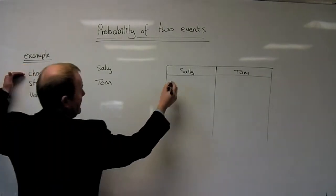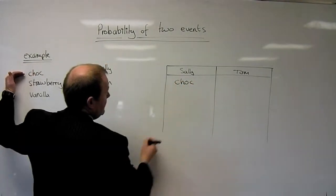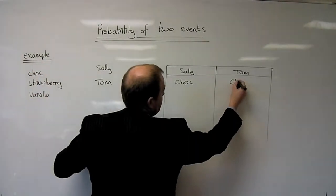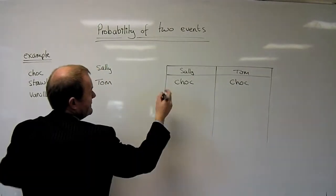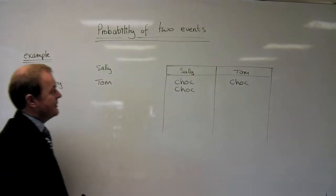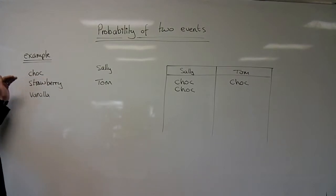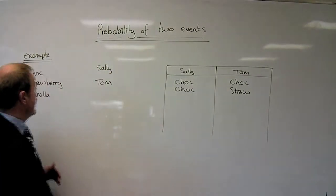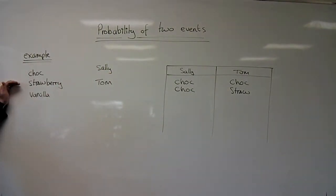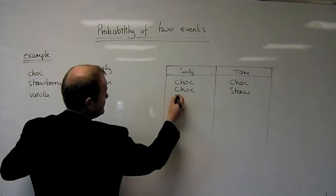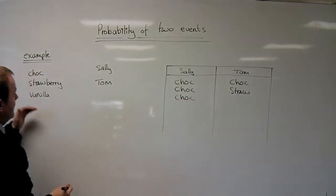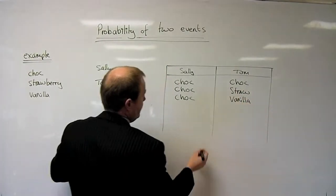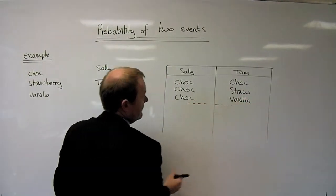Sally might choose chocolate. If she chooses chocolate, Tom might choose chocolate as well. I'm going to fix Sally on chocolate and cycle through the options for Tom. So Sally chooses chocolate and Tom chooses strawberry. Then Sally chooses chocolate and Tom chooses vanilla. That gives us one group of three possible outcomes.